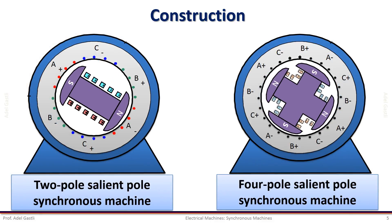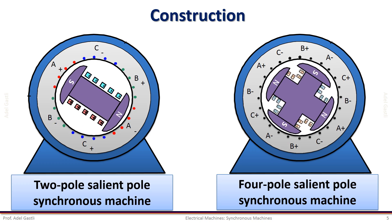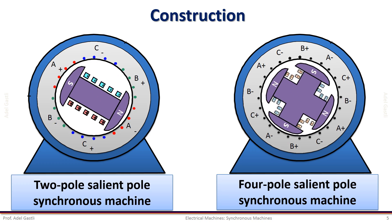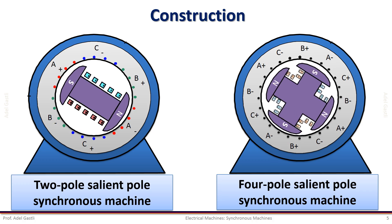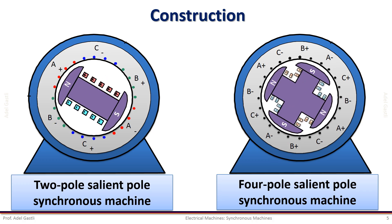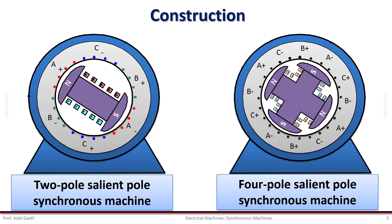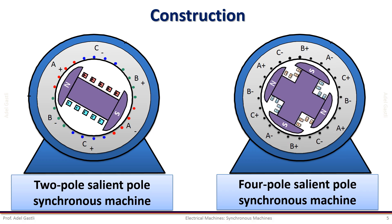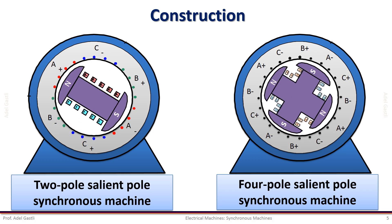These are two examples of salient pole type synchronous machine construction. The one on the left hand side is a two-pole salient pole machine, and the one on the right hand side is a four-pole salient pole machine.